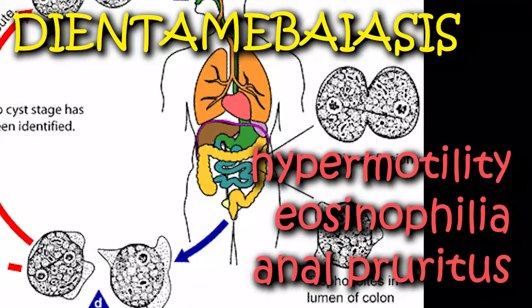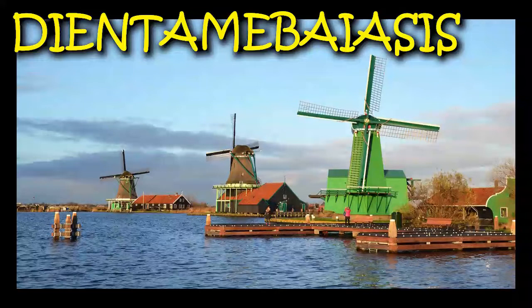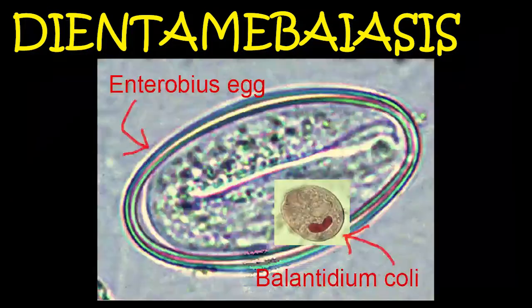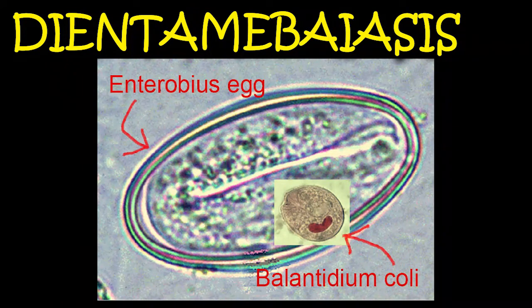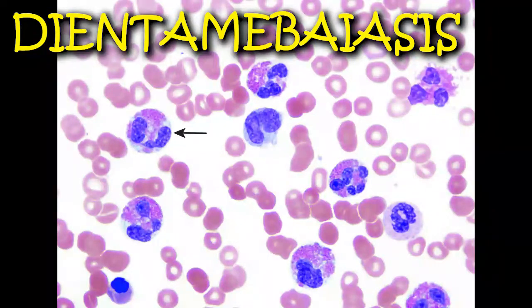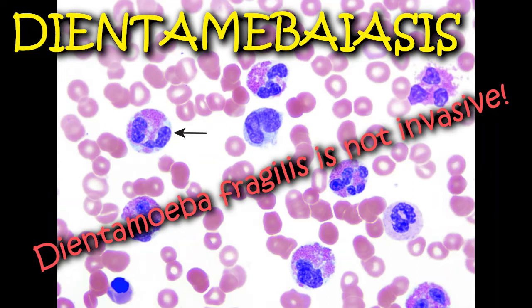Bowel hypermotility, eosinophilia, and anal pruritus are also commonly associated with infections. Unlike most intestinal protozoans, Dientamoeba fragilis infections are also common in developed countries such as Germany and Holland. Some literature states that D. fragilis can be found in Enterobius eggs, which are transmitted via direct human-to-human interactions. The pinworm association is also a suspect in some of the signs and symptoms; eosinophilia has been attributed to pinworm co-infection since D. fragilis is not invasive in the large intestines.